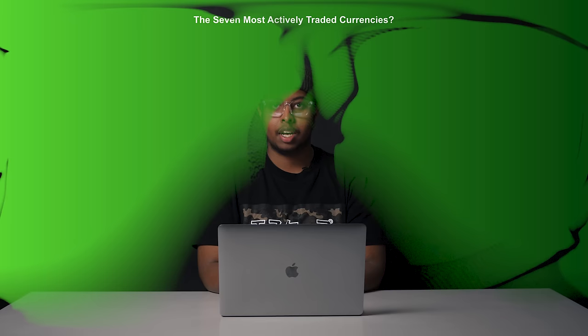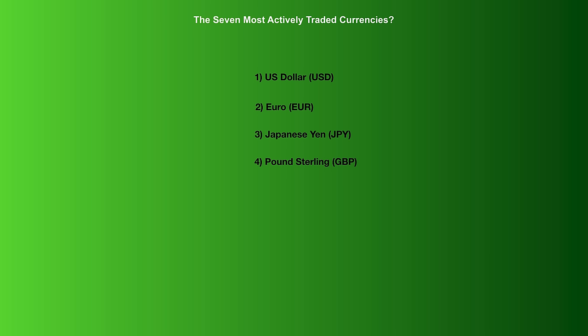Now let's talk about the seven most actively traded currencies. Number one, the US dollar (USD). Number two, the Euro. Number three, Japanese Yen (JPY). Number four, pound sterling. Number five, the Australian dollar (AUD). Number six, the Canadian dollar (CAD). Number seven, Swiss franc (CHF).